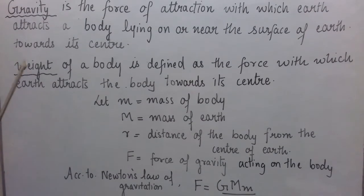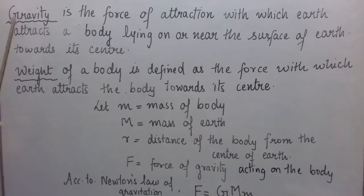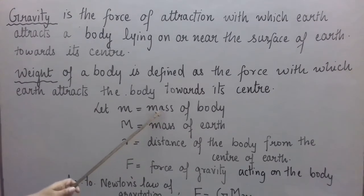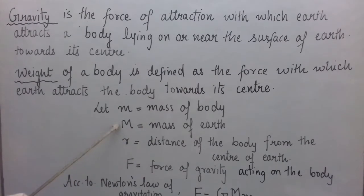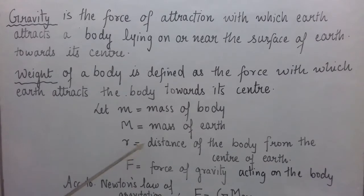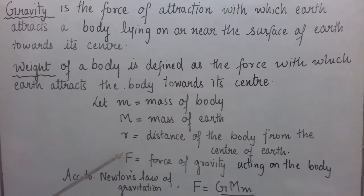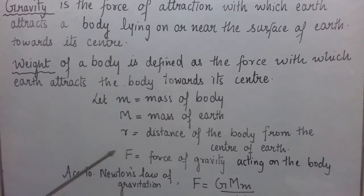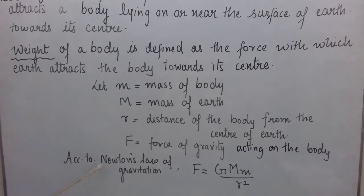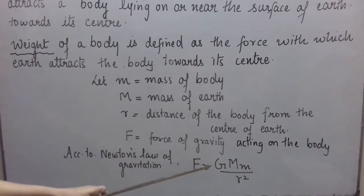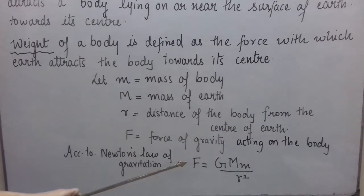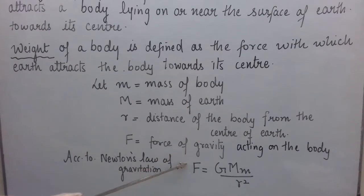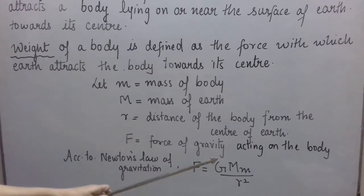Let us rewrite Newton's universal law of gravitation as a mathematical expression for gravity. If small m is the mass of any body lying on or near the surface of earth, capital M is the mass of earth, small r is the distance of the body from the center of earth, and F is the gravitational force between earth and the body — that is, the force of gravity — then F equals G times M times m divided by r squared. This expression represents the force of gravity acting on the body, which is also the weight of the body.